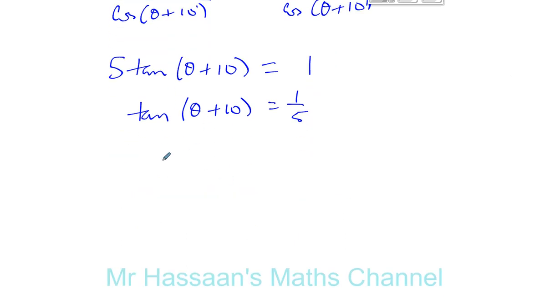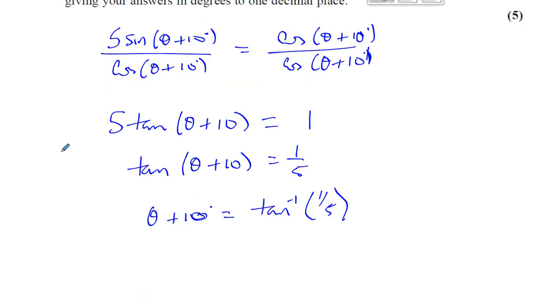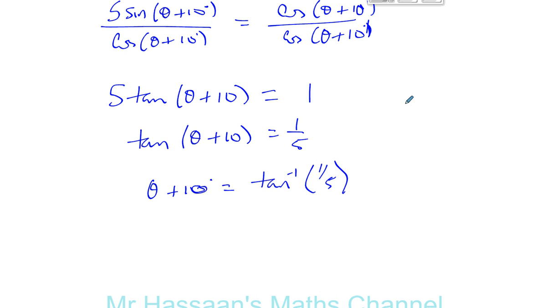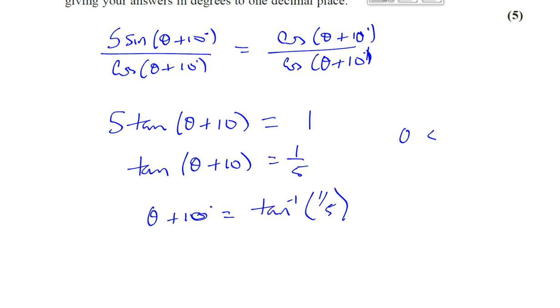I can say theta plus 10 will give me inverse tan of 1 fifth. I have to make sure I'm careful about catching all the solutions. They asked us for solutions between 0 and 360, so they want us to solve between 0 is less than or equal to theta which is less than 360.